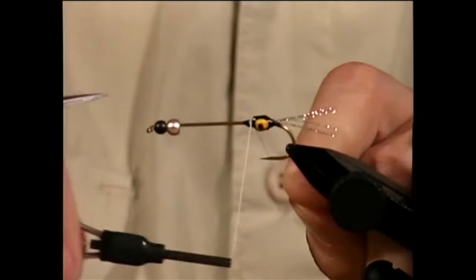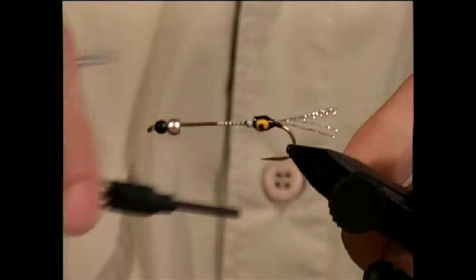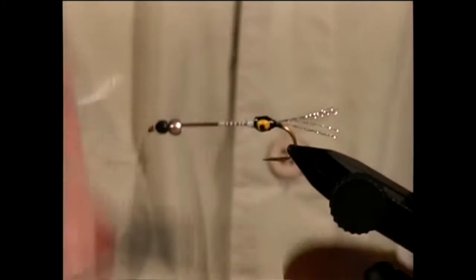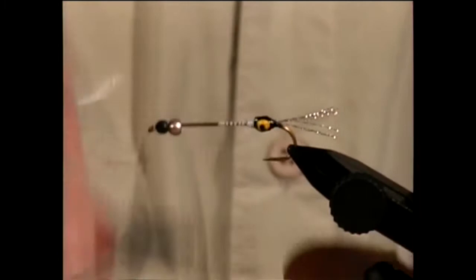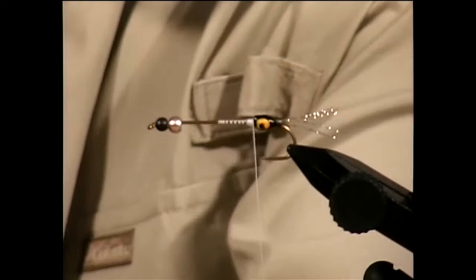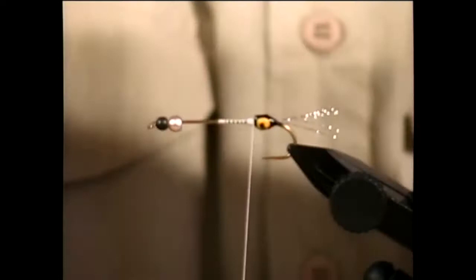I'm going to start a base wrap right in front of the eye. Now, I've already painted this eye on, but you can also use a doll eye and epoxy that on if you want. I get some white thread on the hook here. In the back half of the body, I'm going to use the double magic technique. I'm going to use this technique with some silver crystal flash, which I'll tie in right in front of the eye.